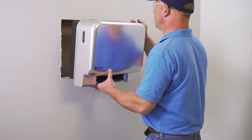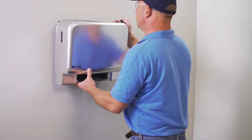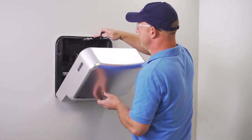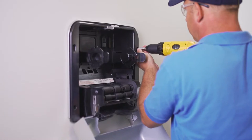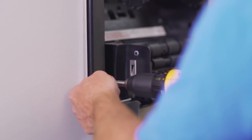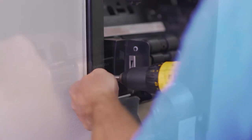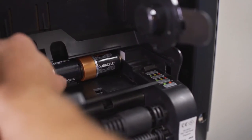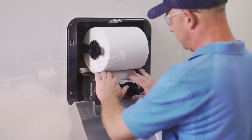Open the dispenser with the key and place the dispenser into the wall cutout. Attach the dispenser to the wall studs using four screws through the screw bosses. Install the batteries and then install the dispenser paper.